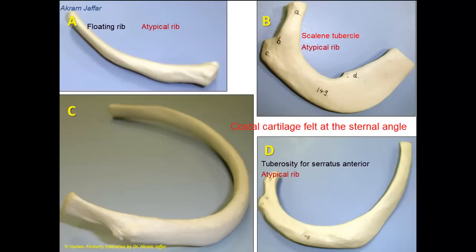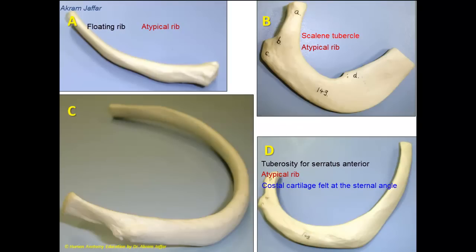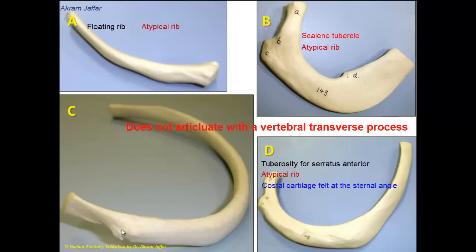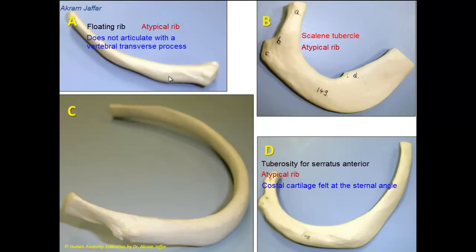The costal cartilage felt at the sternal angle is that of the second rib — the second costal cartilage — so this only matches with D. Regarding ribs that do not articulate with a vertebral transverse process: the part of a rib that articulates with a vertebral transverse process is the tubercle. The only ribs that do not have tubercles and do not articulate with the transverse process of a vertebra are the 11th and 12th ribs.